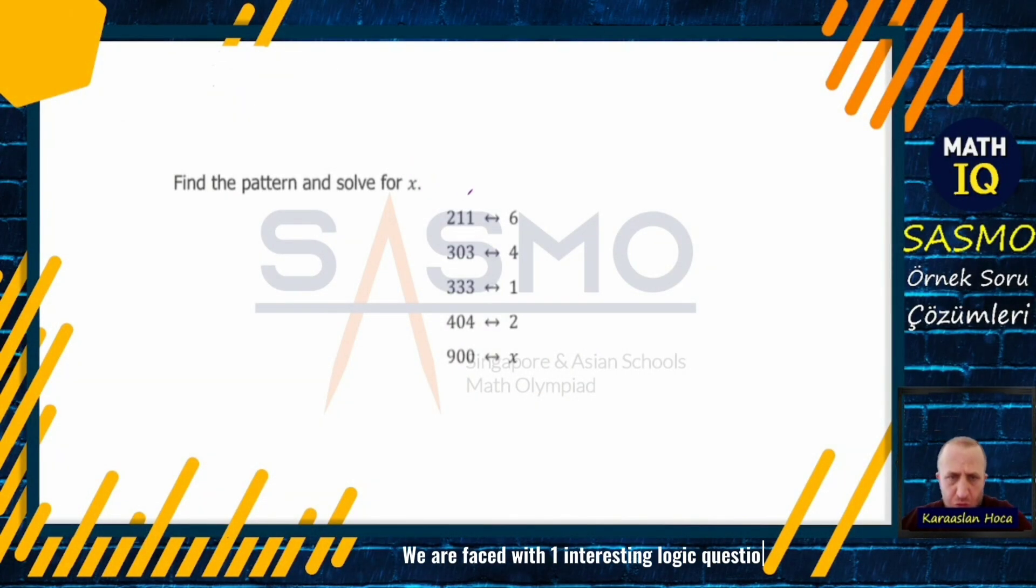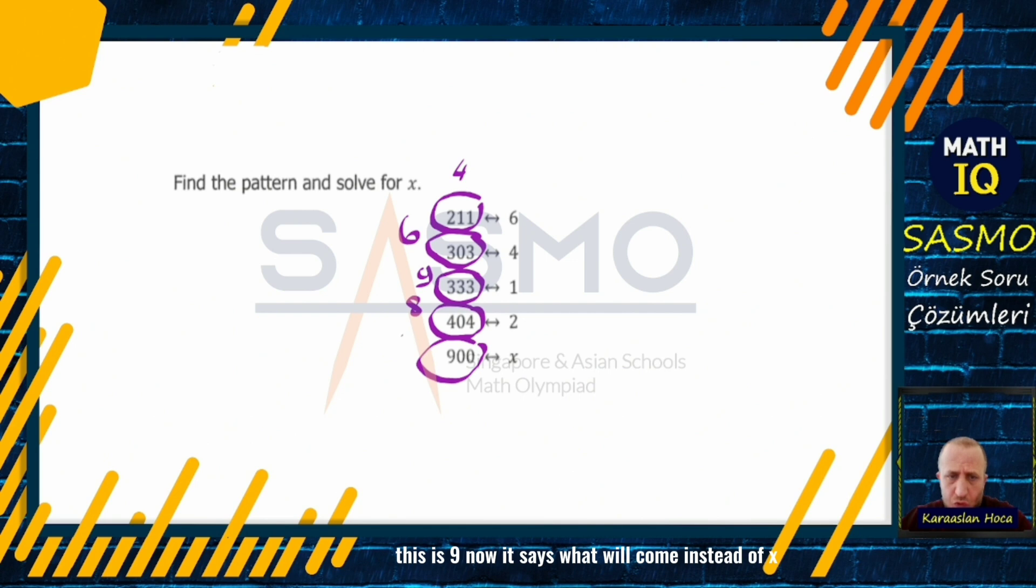We are faced with one interesting logic question. So we never know how it will come. We need to think in every direction. We need to direct different perspectives to the question. We need to look from different perspectives. Now look what the sum of these does. Be careful what this total is doing. What does this total of 6 do? 9 here is 8. This is 9. Now it says what will come instead of x.